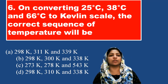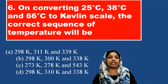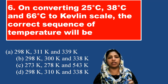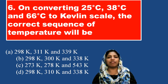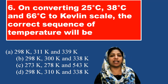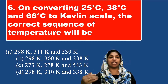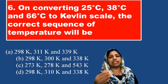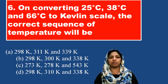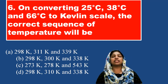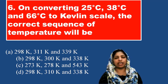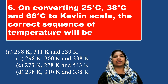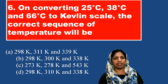Looking at the options: 298 Kelvin for 25°C. We can rule out option C. For 38°C, we add 273, which gives 311 Kelvin.